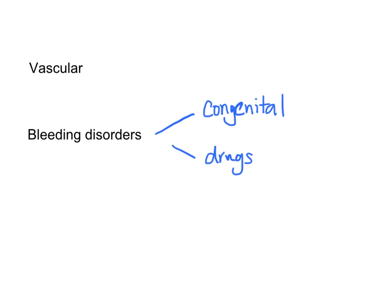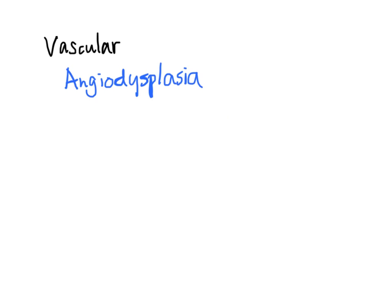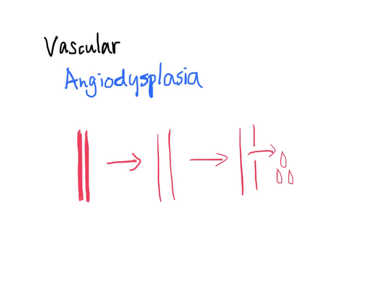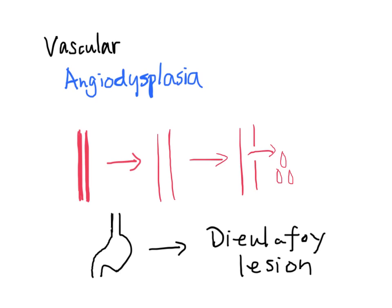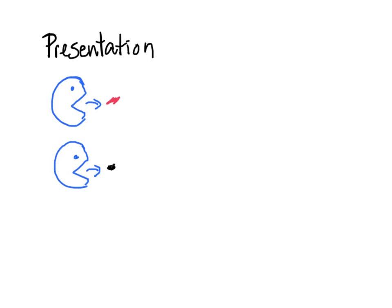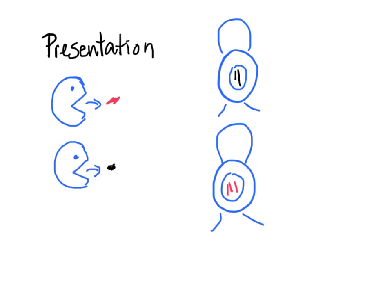We're now going to look at some general causes of bleeding in the upper GI tract. It can be from a vascular disorder, or from a bleeding disorder that is either congenital or from drugs such as warfarin. The most often seen vascular cause is known as angiodysplasia — it can happen anywhere in the GI tract. In angiodysplasia, the normally strong wall of the blood vessel has become thin and friable, and therefore it starts to bleed. If there is an angiodysplastic lesion of one of the small blood vessels in the stomach, it has a specific name called the Dieulafoy lesion. Depending on where the lesion is, an angiodysplastic lesion can present as hematemesis, coffee ground emesis, melena, or bright red blood per rectum.